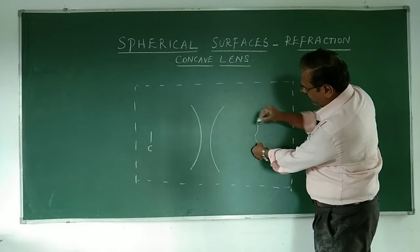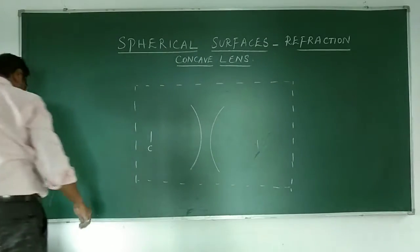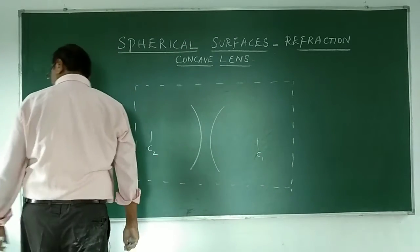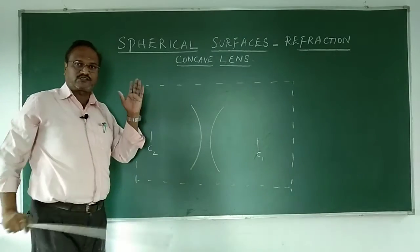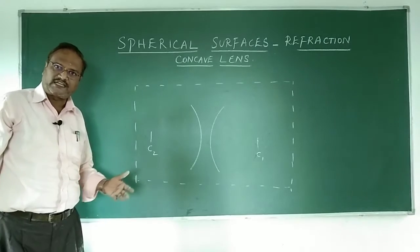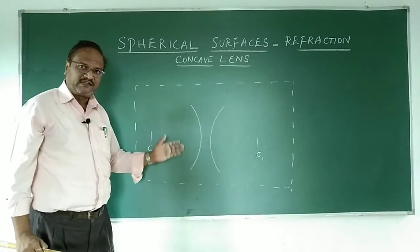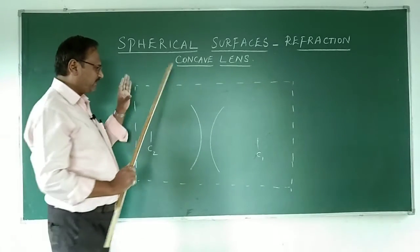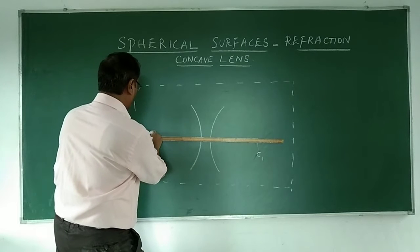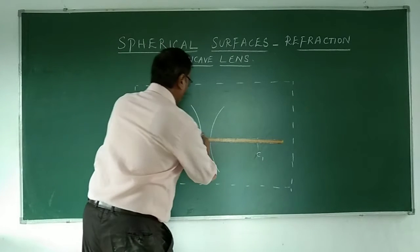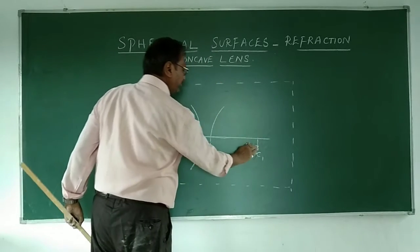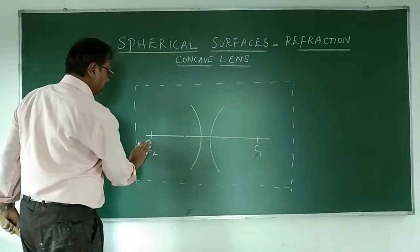I draw another curve like this, and this is the center of curvature. There are now two centers of curvature — one is on the right hand side and another is on the left hand side. Now let me join these two with a line. So this is C1 and this is C2.